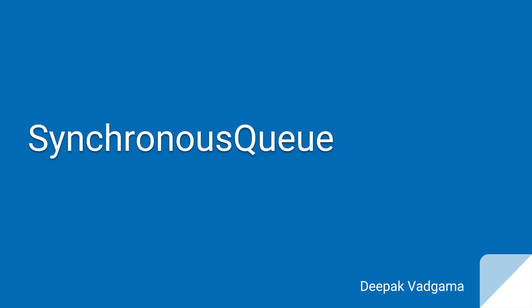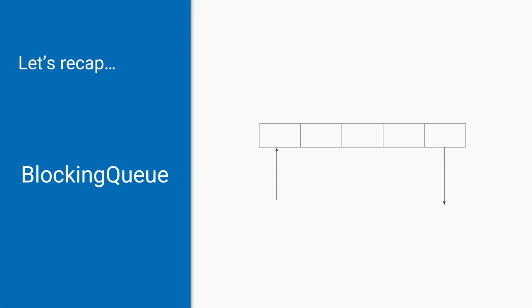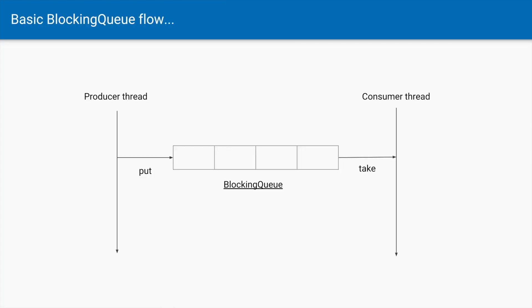Before we understand what a synchronous queue is, we need to understand what a blocking queue is, because synchronous queue is very much related to the blocking queue. A blocking queue is a queue — an array of elements — where a producer thread keeps on adding elements to the queue and a consumer thread takes elements from the queue. For simplicity, I've shown one producer and one consumer thread, but a blocking queue is a thread-safe data structure.